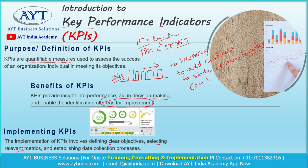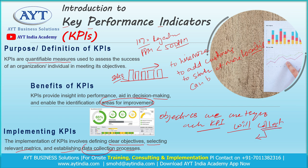For implementing KPIs, we should have clear objectives, select relevant measures, and establish a data collection process properly. The data collection method should be clear and systematic so data can be collected easily. I have seen many companies who started implementing KRAs and KPIs but stopped after two or three months because the data they were collecting was not correct, or data collection started but stopped after some time. Data collection is very important in implementing KPIs.